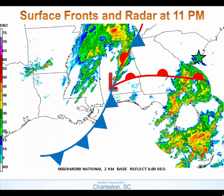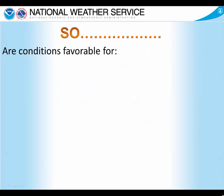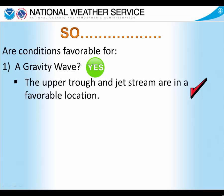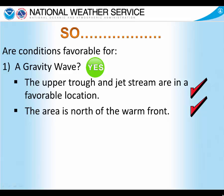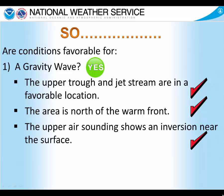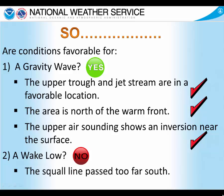Let's take a look at the surface fronts and radar at 11 o'clock that evening. Again, the Charleston area is marked with the star. We can see an area of low pressure in southern Alabama with a cold front trailing to the south and a warm front extending to the east, to the south of the Charleston area. Notice there is a lot of shower and thunderstorm activity along and south of the front, and that activity is moving eastward into the western Atlantic Ocean. Are conditions favorable for a gravity wave? Yes, they are — the upper trough and jet stream are in a favorable location, the area is north of the warm front, and the upper air sounding shows an inversion near the surface. How about a wake low? No — the squall line has passed too far south of the area to be a concern.